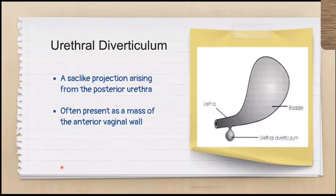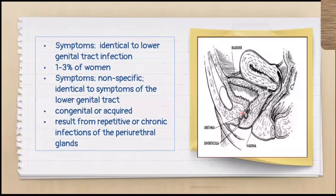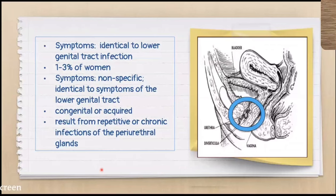Now let's go to the vagina. Number one is the urethral diverticulum, which is a sac-like projection arising from the posterior vulva. It usually presents as a mass in the anterior vaginal wall. When you do an internal examination, you'll be able to feel the mass on the anterior portion. It is usually congenital or acquired and results from repetitive or chronic infections of the periurethral tissue. These patients are usually referred to urogynecology.